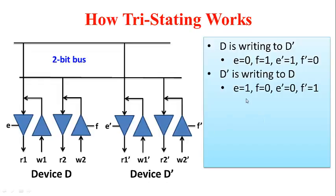Likewise, we can use the pattern E equal to 1, F equal to 0, E' equal to 0, F' equal to 1 to have a situation where D' is giving some data to D.